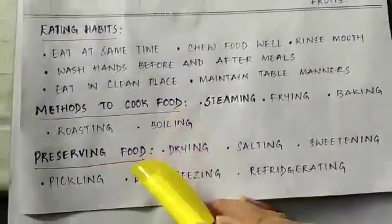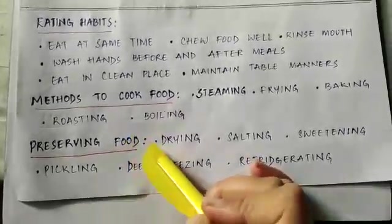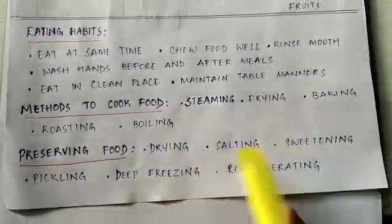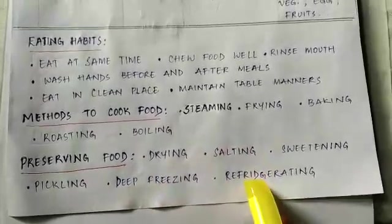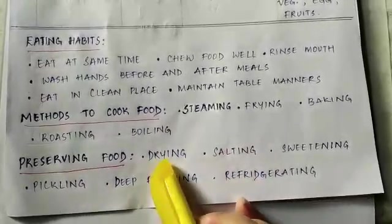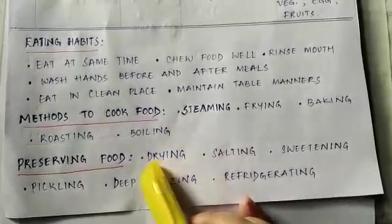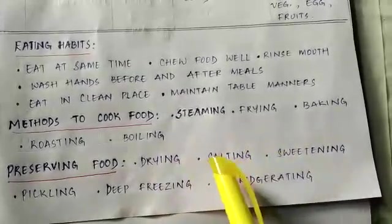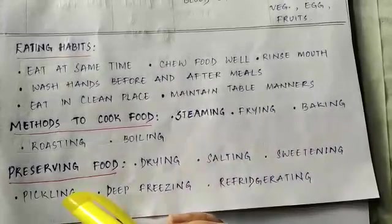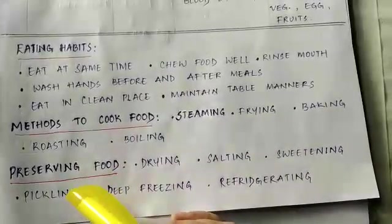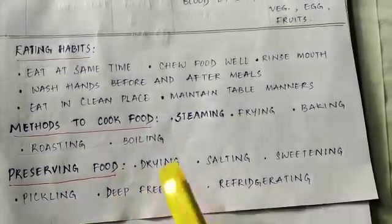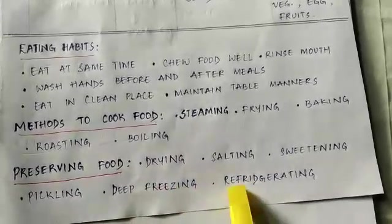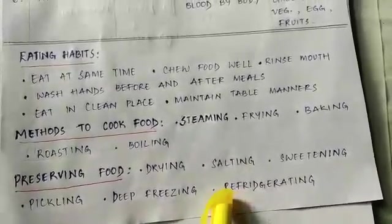Food can also be preserved so we don't waste it. Preservation methods include drying — like making raisins from grapes, salting, sweetening — like making jams and jellies, pickling — cutting fruits and vegetables and mixing with spice, salt, and oil, deep freezing — storing in a deep freezer for a longer period, and refrigerating — storing in a fridge for a shorter period.